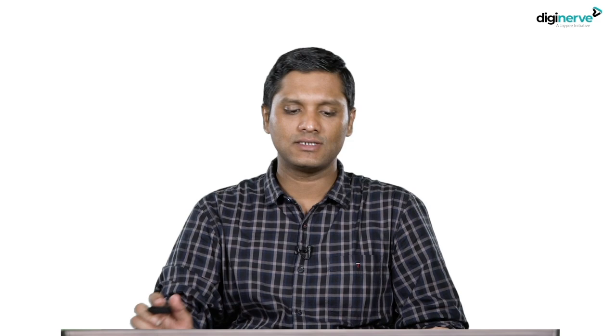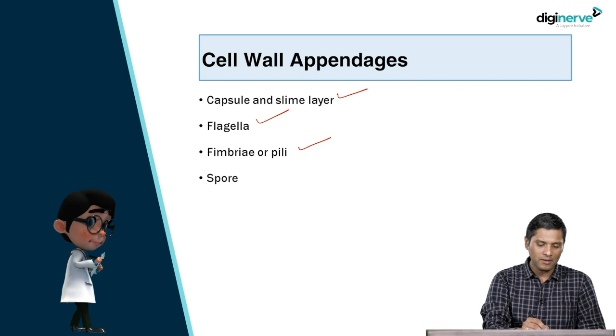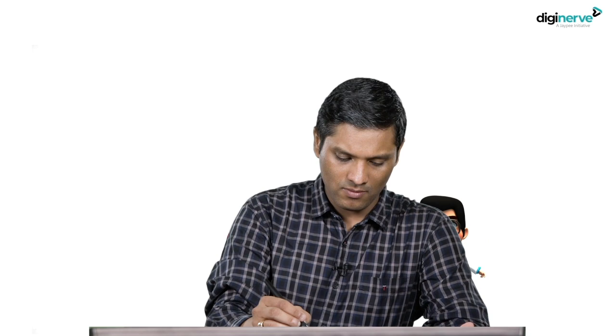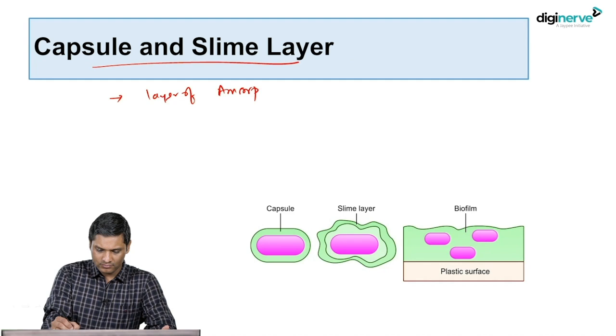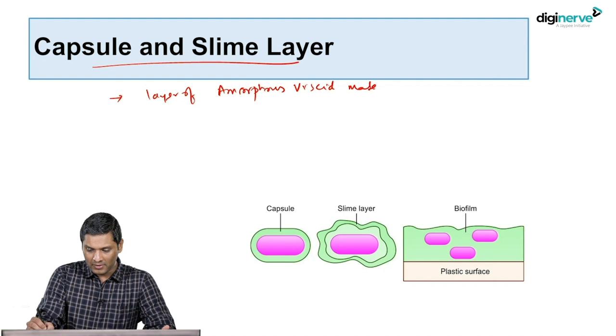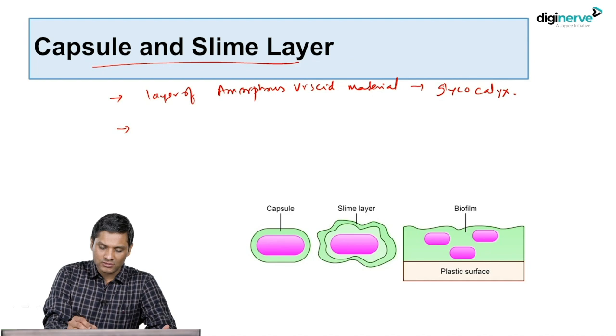The various cell wall appendages are capsule, flagella, fimbriae or pili, and bacterial spore. The capsule and slime layer are usually present external to the bacterial cell wall. They are a layer of amorphous viscous material usually called glycocalyx. If this amorphous viscous material is well organized and difficult to remove, then it is called a capsule.